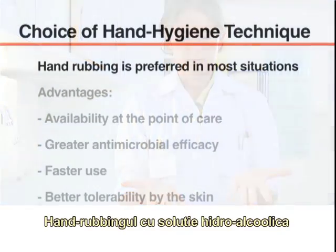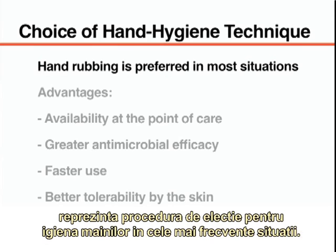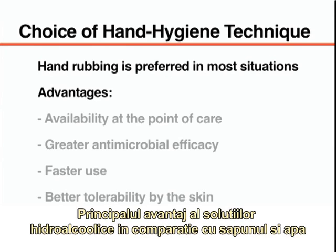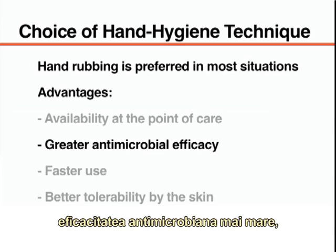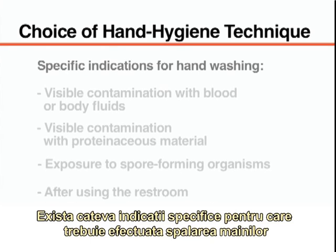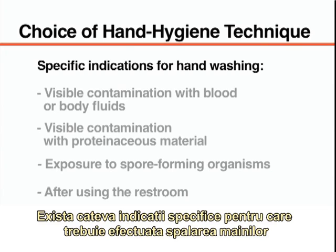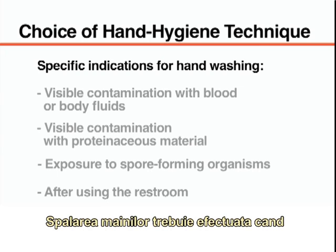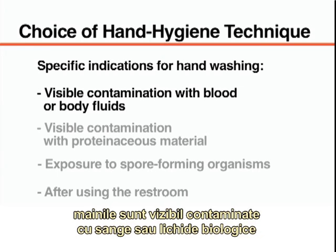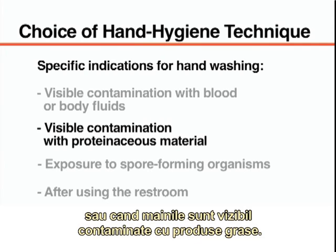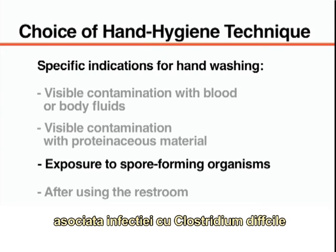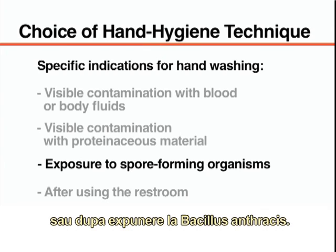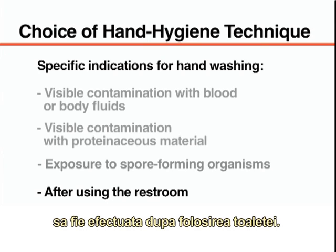Hand rubbing with an alcohol-based formulation is the preferred hand cleansing procedure in most clinical situations. The main advantages over soap and water include availability at the point of care, greater antimicrobial efficacy, faster use, and better tolerability by the skin. There are a few specific indications for which hand washing should be performed instead: when the hands are visibly contaminated with blood, body fluids, or proteinaceous material; after exposure to spore-forming organisms such as Clostridium difficile or Bacillus anthracis; and after using the restroom.